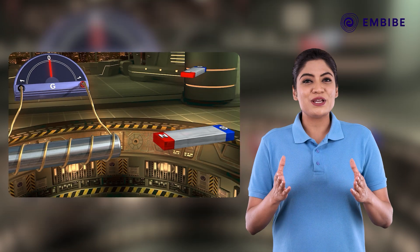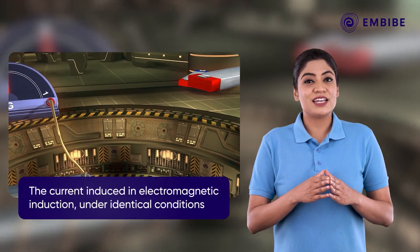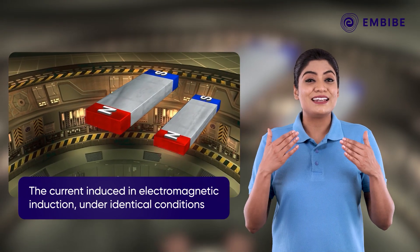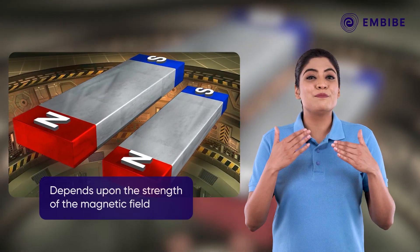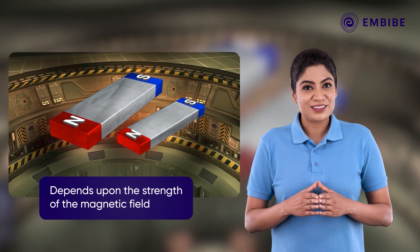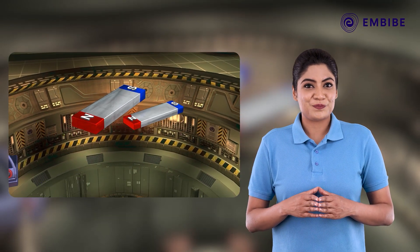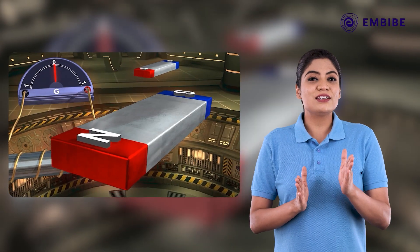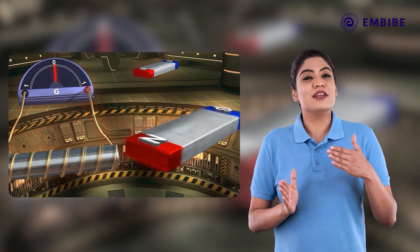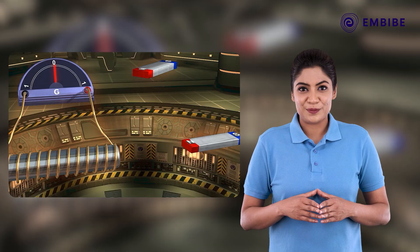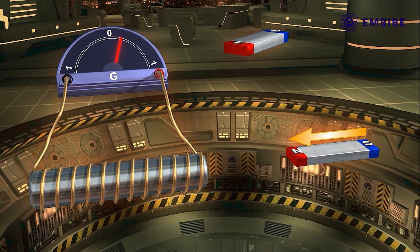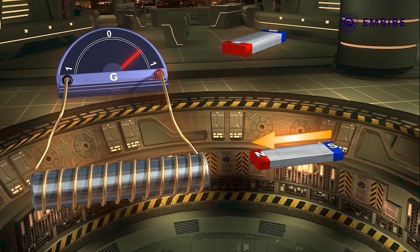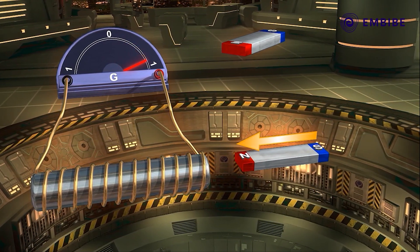So we can say that the current induced in electromagnetic induction under identical conditions depends upon the strength of the magnetic field. Now, keeping the first magnet, just increase the number of turns in the coil. As we move the magnet towards the coil, we can see that the galvanometer shows more deflection.